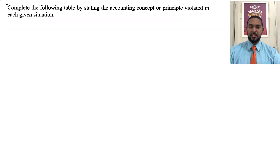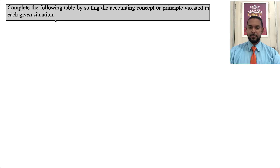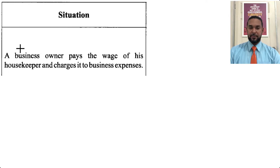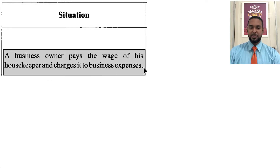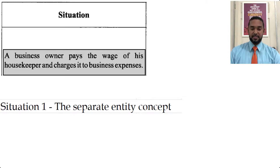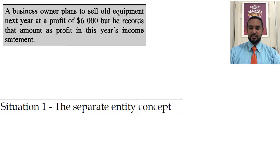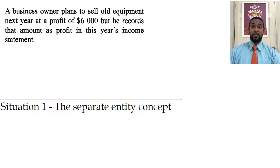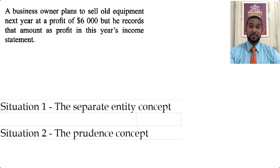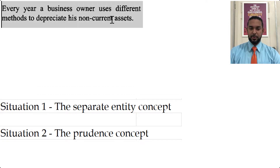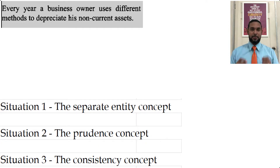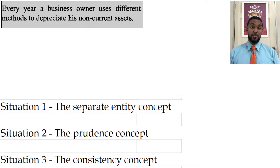The last part asks us to complete a table by stating the accounting concept or principle violated in each situation. First: a business owner pays the wage of his housekeeper and charges it to his business expenses — that's a violation of the separate entity concept. Second: a business owner plans to sell old equipment next day at a profit of 6,000 but records the profit in this year's income statement — you cannot record revenue before it is earned, so this violates the prudence concept or the revenue recognition concept. Third: every year a business owner uses different methods to depreciate his non-current assets — that's a violation of the consistency concept. You are supposed to use the same method from year to year unless there's a justifiable reason to switch.